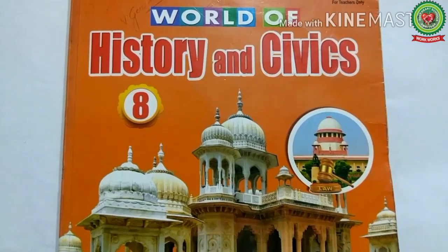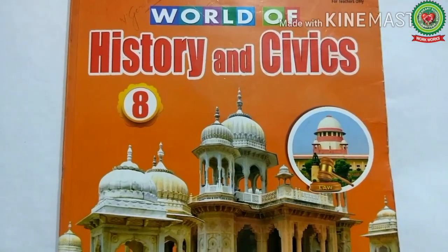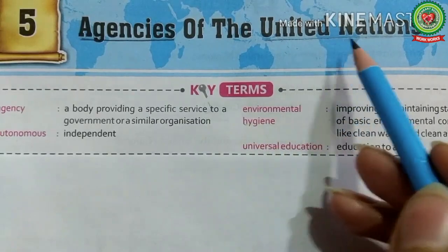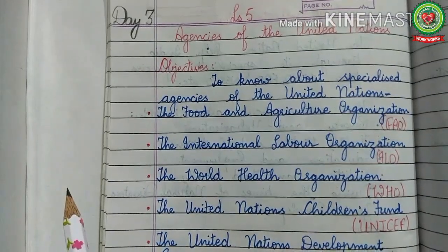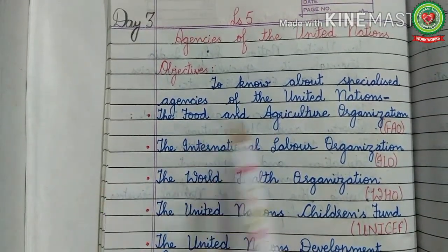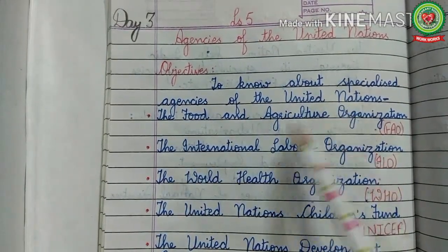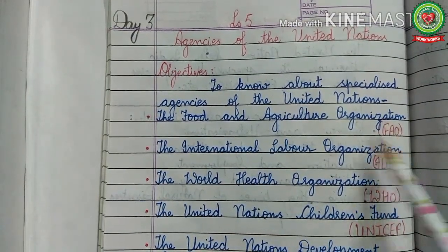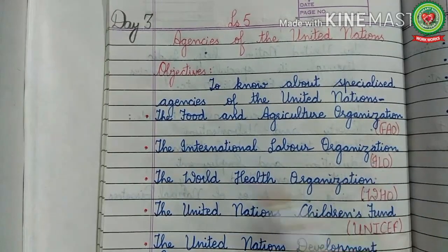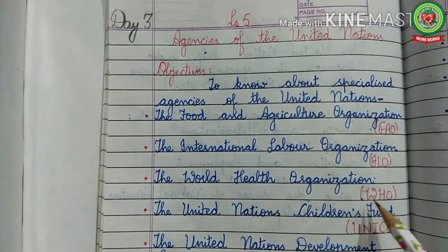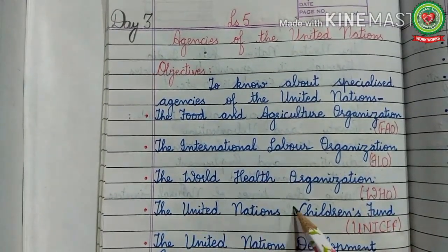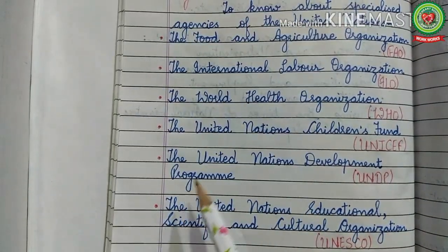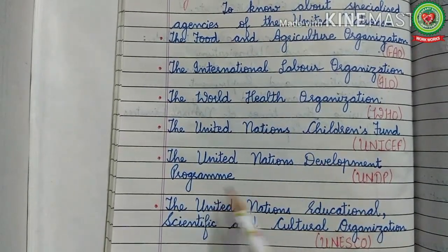Hello everyone, open your History and Civics book, Class 8, Lesson 5: Agencies of the United Nations. The main objective of this lesson is to know about specialized agencies of the United Nations. Earlier we had discussed the Food and Agriculture Organization (FAO), the International Labor Organization (ILO), the World Health Organization (WHO), and the United Nations Children's Fund (UNICEF).